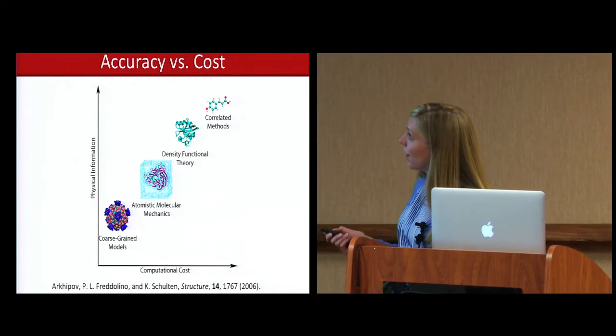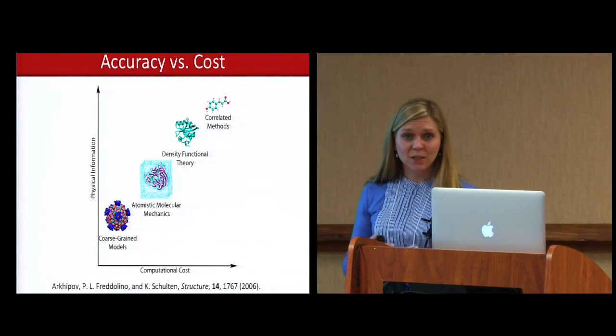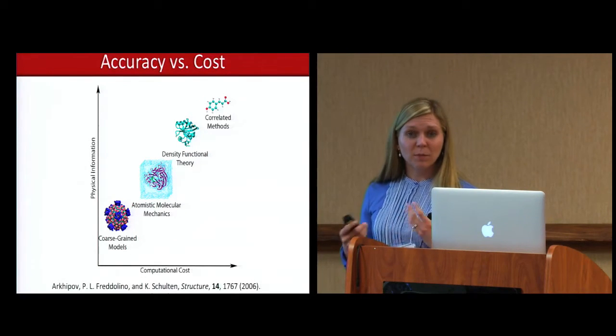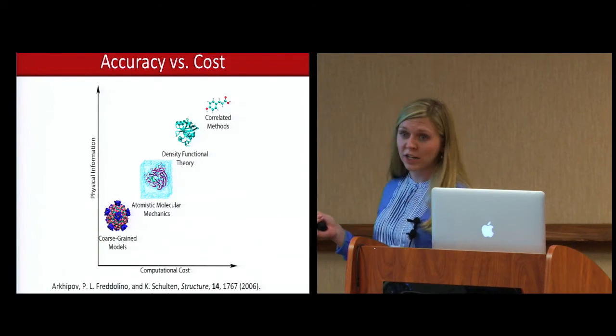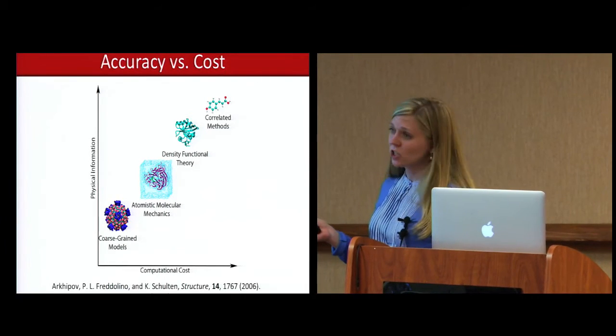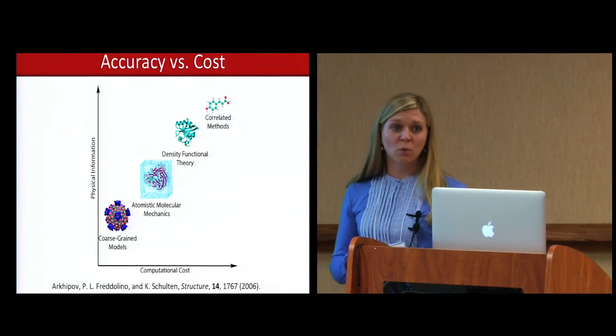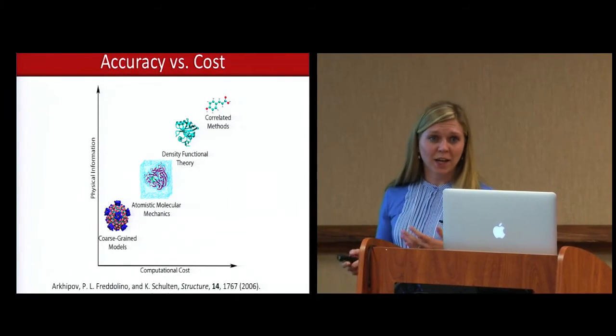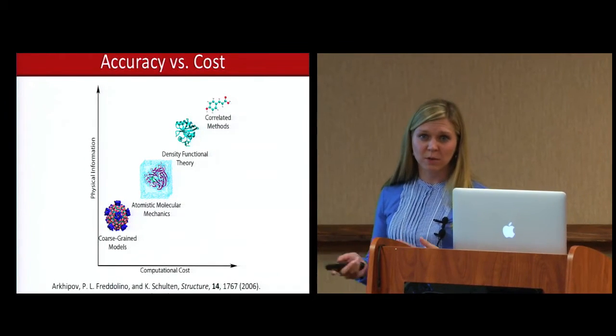But unfortunately with these correlated methods they scale as something like system size to the 6th or system size to the 5th. So one approach that I've been working with is to develop an approximation that actually lowers the formal cost of some of these correlated methods to system size to the 4th so that it's actually acting more like the cost of a density functional theory calculation while maintaining some of the nice properties specifically of coupled cluster theory. And I'll be looking at CC2, which is a coupled cluster theory that includes some of the singles and doubles approximations.